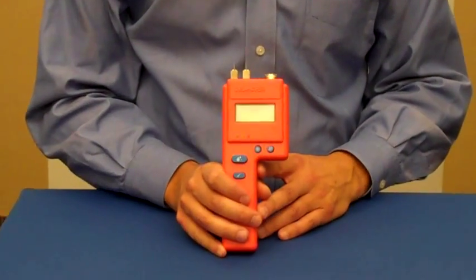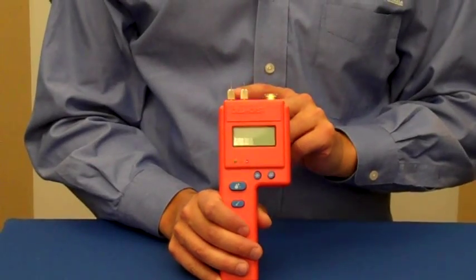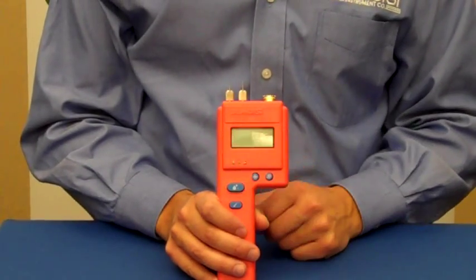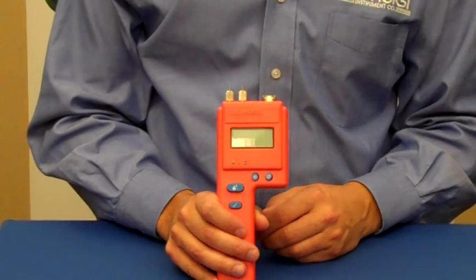The BD2100 is a pin type moisture meter. It's very flexible in that it can measure moisture in drywall, wood and other building materials like insulation and concrete.